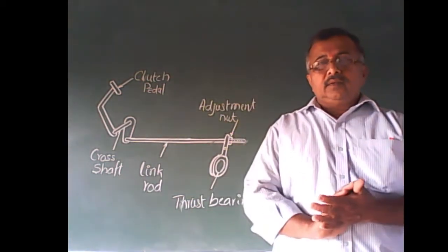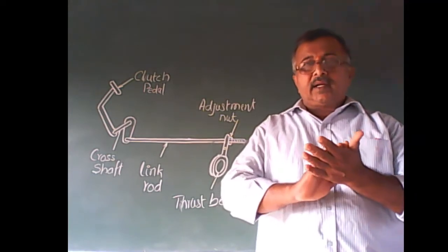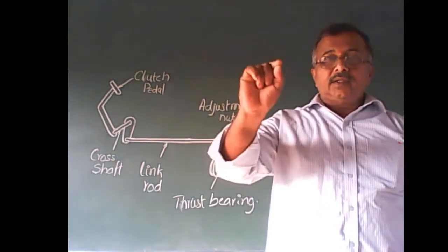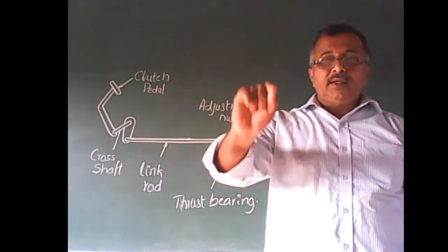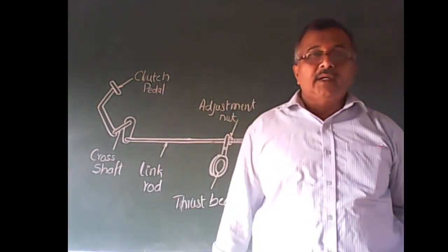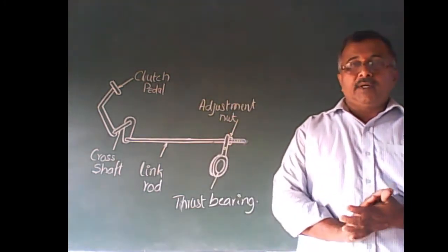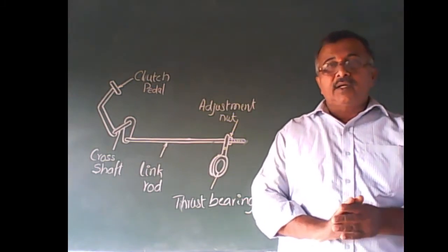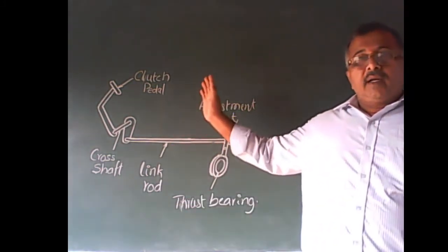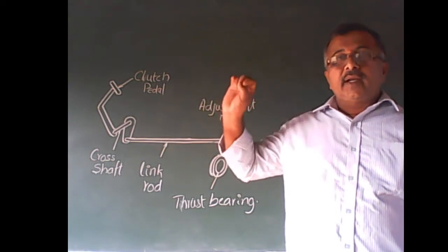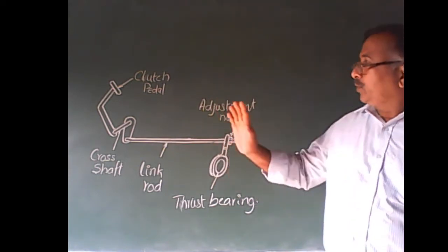We know clutch is operated by a clutch pedal, but how that clutch pedal movement is connected to the withdrawal plate or release bearing of the clutch from pedal to clutch. How it is connected and how it is going to operate.